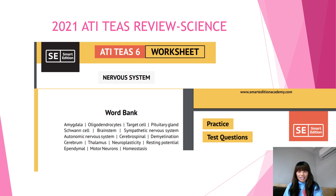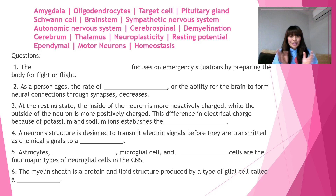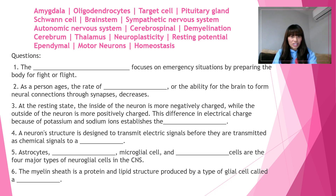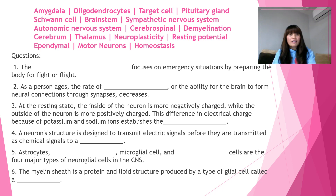Let's go ahead and get started with this review. We're going to go over 15 questions on this worksheet. If you have a piece of paper and a pencil or pen, you can write down your answers as I go. The first question: the blank focuses on emergency situations by preparing the body for fight or flight. The answer to number one is the sympathetic nervous system.